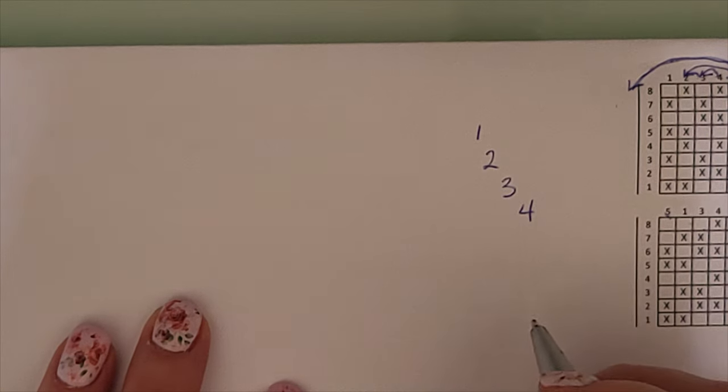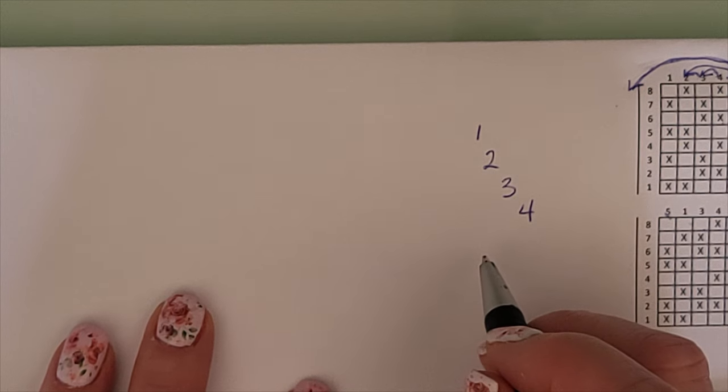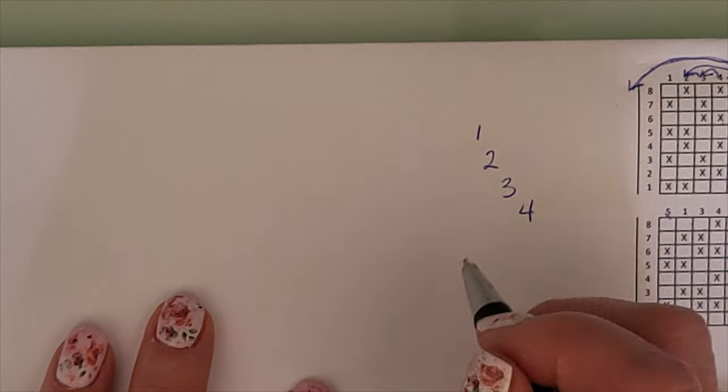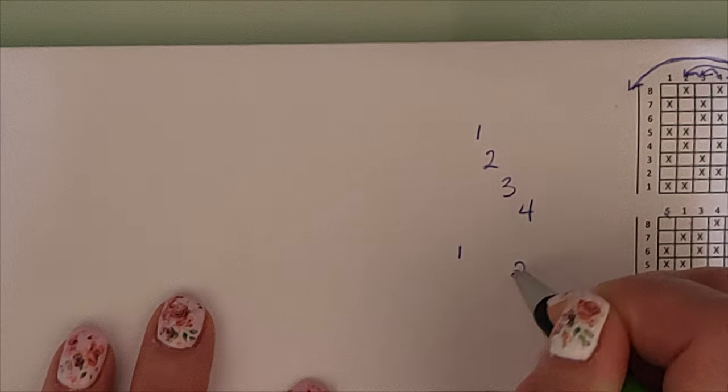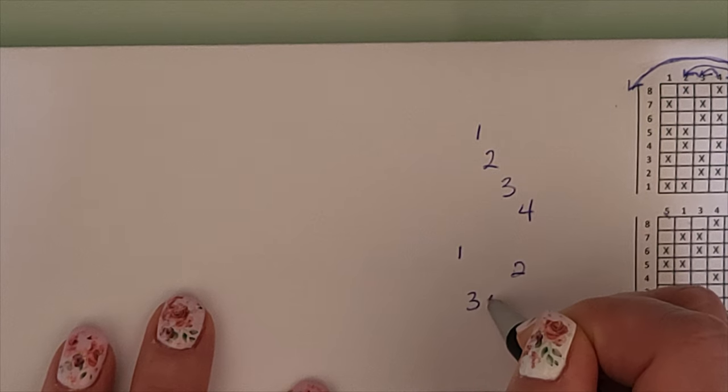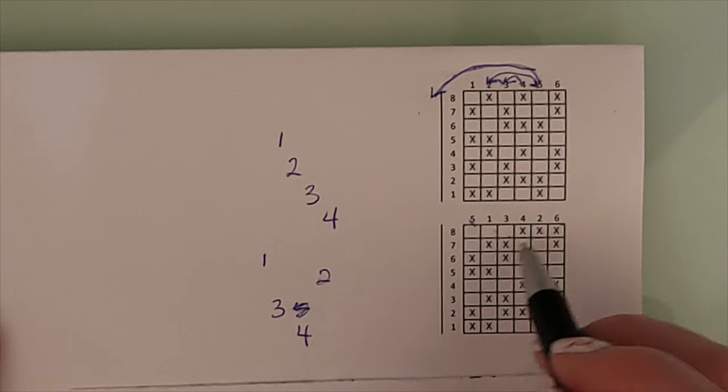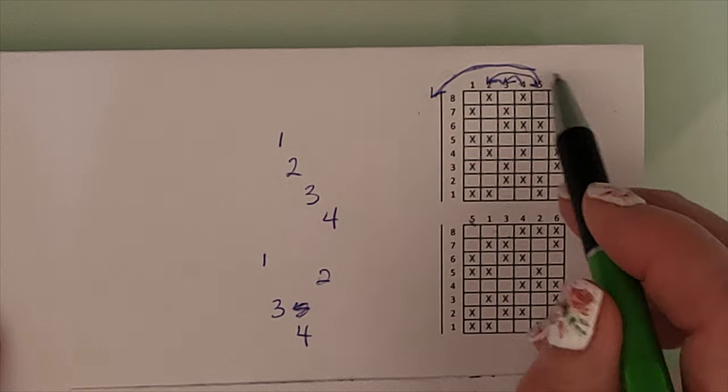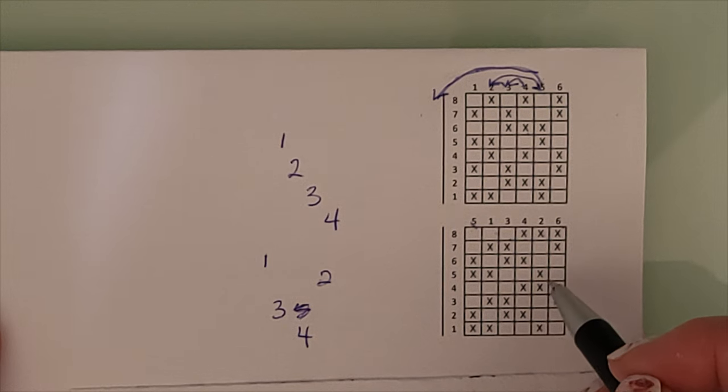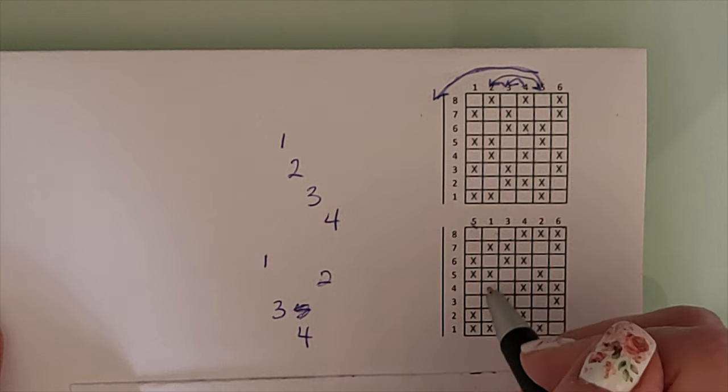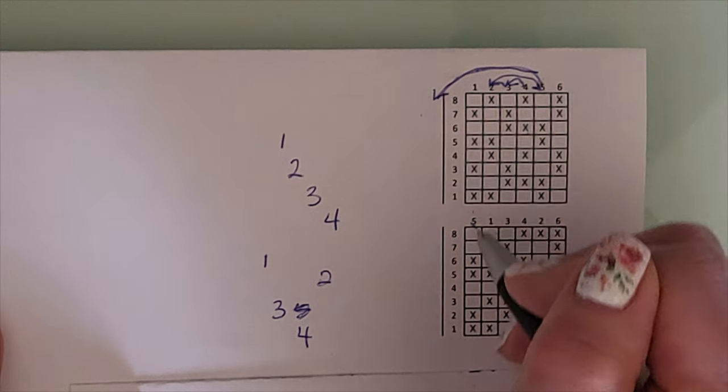The treadling sequence that we're going to switch it to is, we'll do one, two, three, four. So I just moved these columns around from this treadling. And now what I need to do is renumber these. So I'm going to say, we'll write it down here.